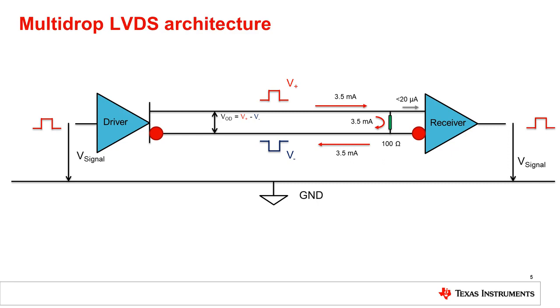The key difference between the 644 standard and the 644A standard is the addition of a leakage current limitation spec. The 644A standard requires receiver inputs to have less than 20 microamps of leakage current to ensure that the receiver is high impedance across the entire common mode range.